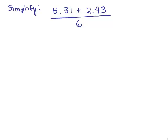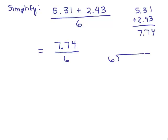We're adding these two decimals. That's 5.31 plus 2.43, which is 7.74. So the numerator is 7.74 over 6, and now we have a division with decimals but we're dividing by a whole number, so we're in good shape to do that.